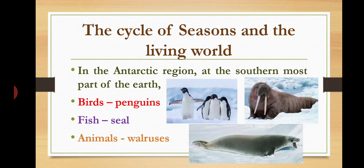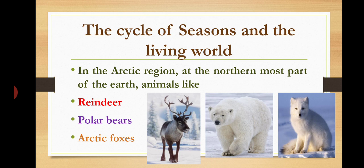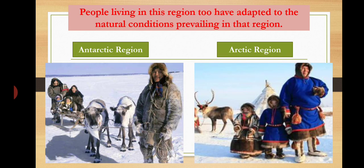In the Antarctic region, at the southernmost part of the Earth, birds like penguins, fish like seals, and animals like walruses are found. In the Arctic region, at the northernmost part of the Earth, animals like reindeer, polar bears, and Arctic foxes are found. People living in these regions have also adapted to the natural conditions prevailing there.